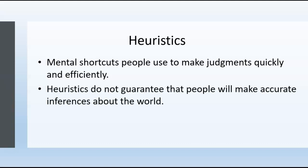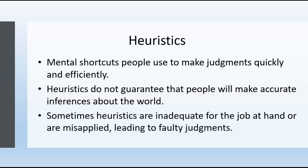Heuristics don't guarantee we'll make the right judgments. More times than not, we never get good feedback on whether we were right or wrong, because we don't experience direct negative consequences if we're wrong. With the story about Julie who read fluently at age four — if someone drops that fact in conversation and you think 'that's a really smart person, I bet their GPA was super high' — do you ever find out if you were right? Probably not. Sometimes heuristics are just not up to the challenge and can lead to faulty judgments.